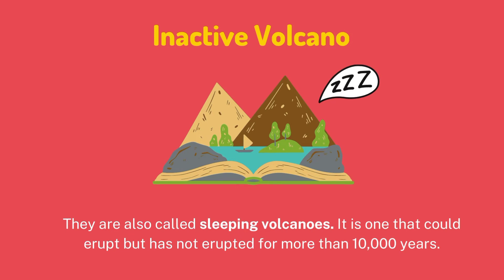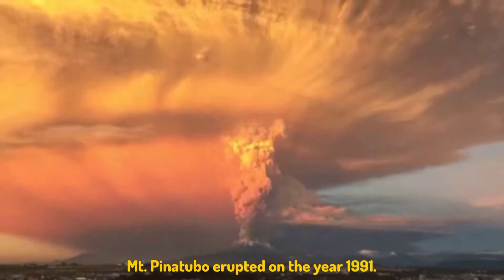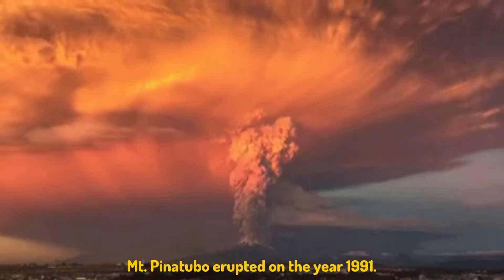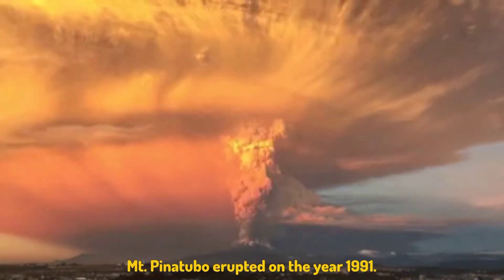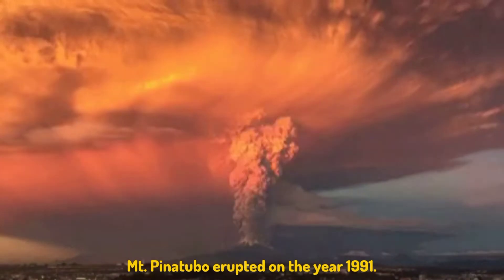On the other hand, we can also classify volcanoes as dormant. They are also called sleeping volcanoes. A dormant volcano is one that could erupt but has not erupted for more than 10,000 years. A dormant volcano is capable of erupting and will probably erupt again in the future, but hasn't had an eruption for a very long time. One example is Mount Pinatubo. Did you know that before, Mount Pinatubo was an inactive volcano? However, it erupted in 1991. Therefore, inactive volcanoes can become active volcanoes.